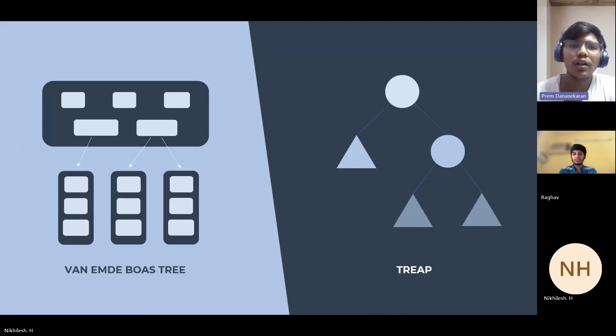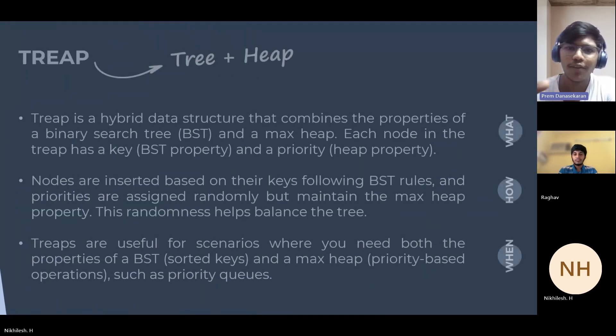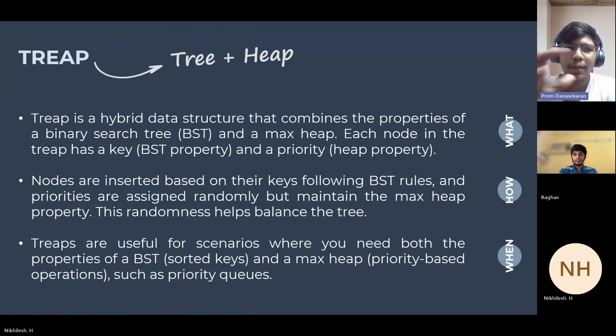Next we'll see about the Treap data structure. A Treap is a hybrid data structure of heap and binary tree, as the name suggests: tree plus heap. A Treap is like a mix between a sorted list and a stack of items. When you add items, they go in order based on their numbers, but their priorities are random, helping to keep the structure balanced. This setup is handy when you want the list to be both sorted and quickly find the most important item.